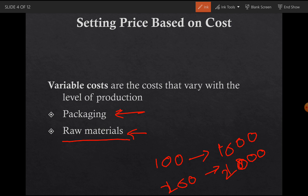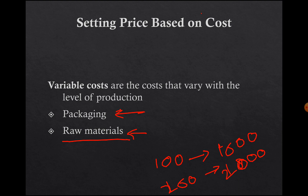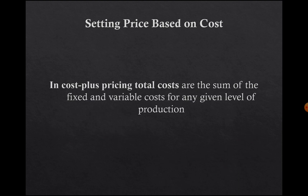So what you are going to do is calculate the variable cost for that period, then add it with the fixed cost to get the total cost. In cost-plus pricing, which is your cost-based pricing, the total cost is the sum of the fixed and variable costs for any given level of production.